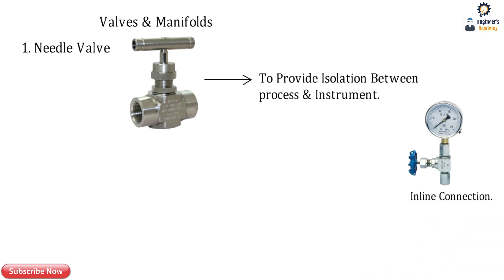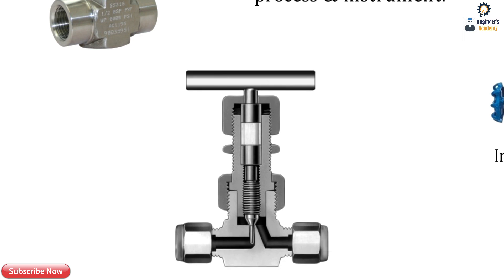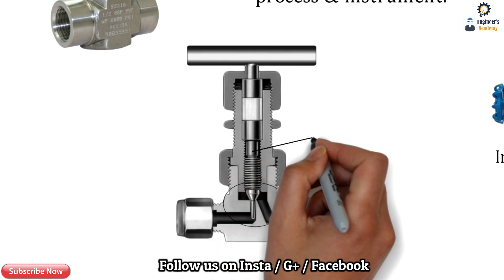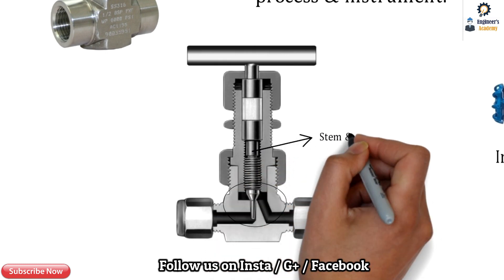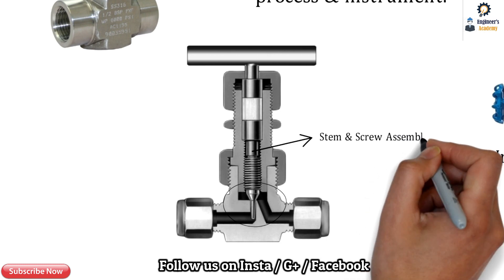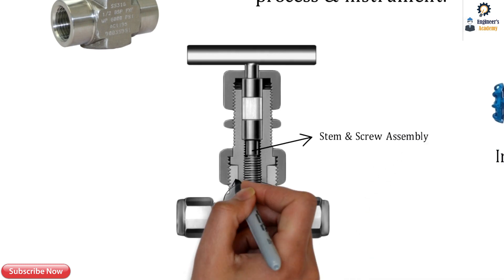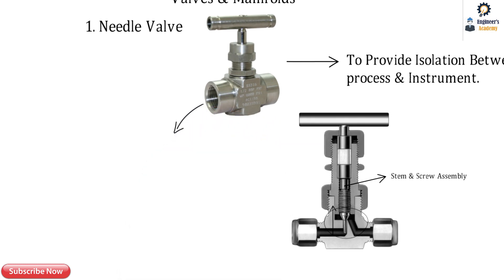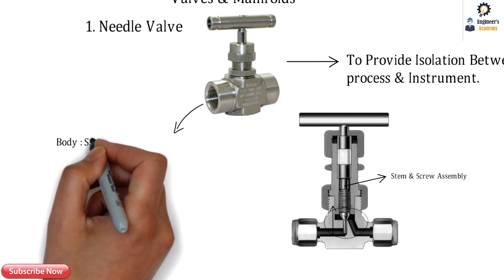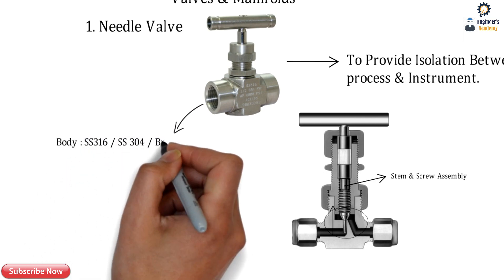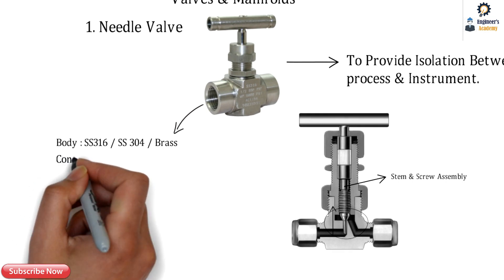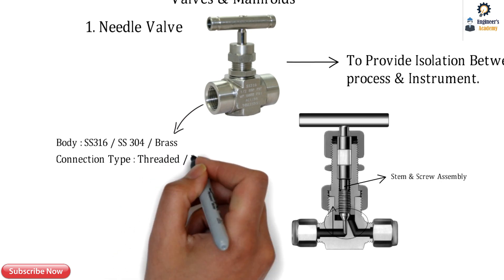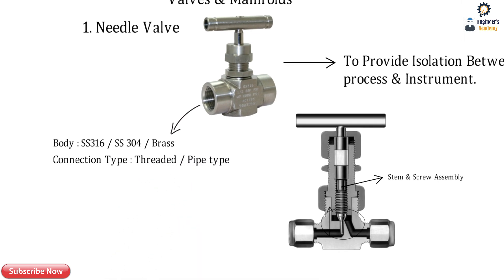This sectional view represents the needle valve. The needle is actuated up and down by a stem and screw assembly, which allows flow to pass from left to right. Regarding specifications, the first and most important element is the body. The body can be made of SS 316, SS 304, or brass, which is less costly.